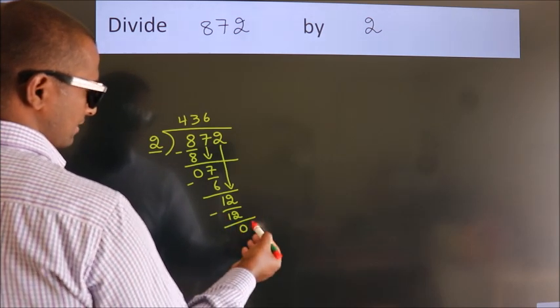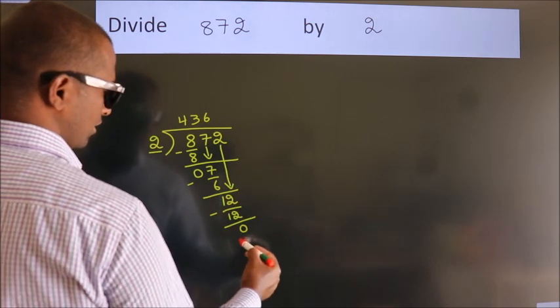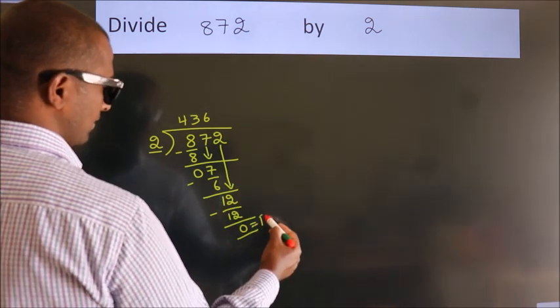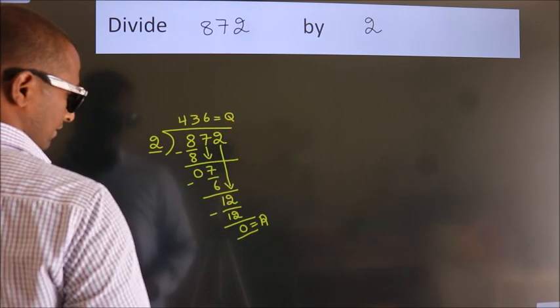After this, no more numbers to bring it down. So we stop here. This is our remainder, this is our quotient: 4, 3, 6.